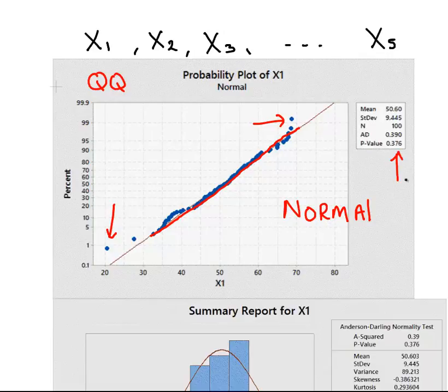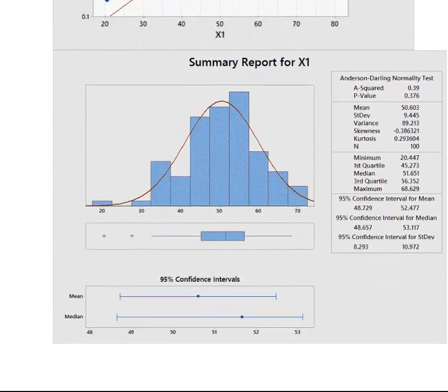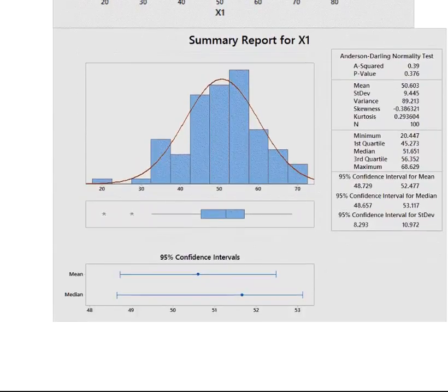Now, up here we have some information like the Anderson-Darling test and the mean and standard deviation, but we're going to look at the Summary Report here. As far as this plot is concerned, QQ Plot, Normal or Not Normal, if the dots follow the line, then it's normally distributed.